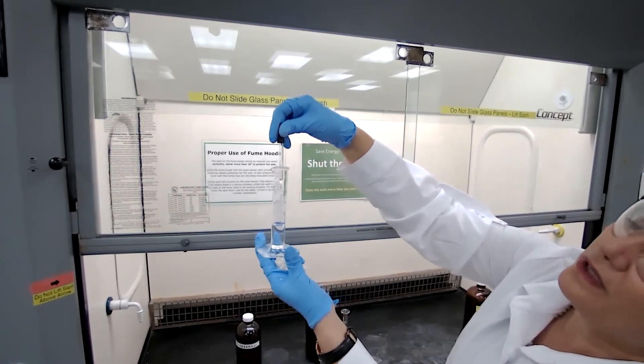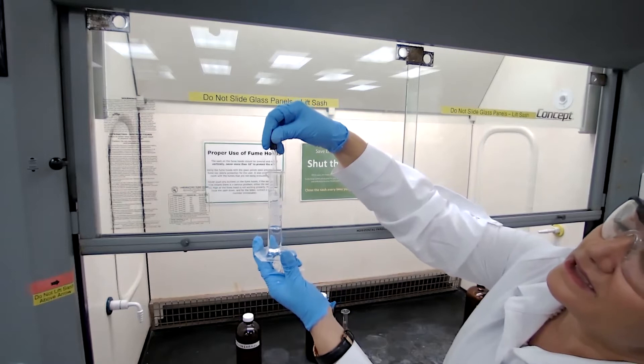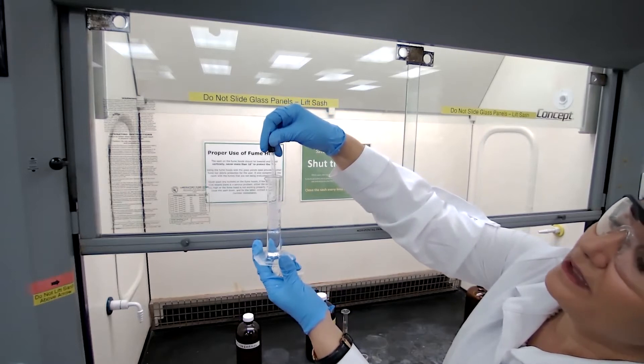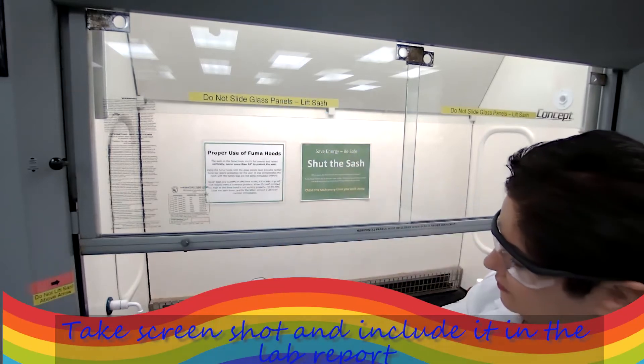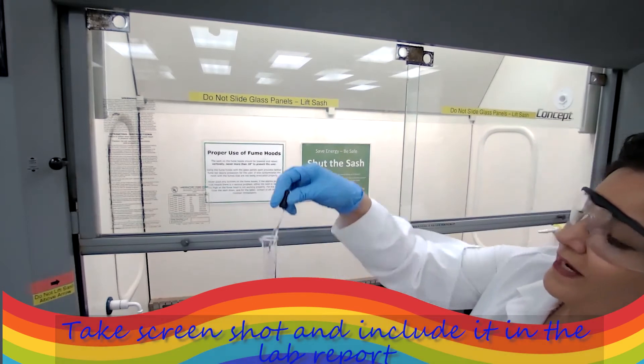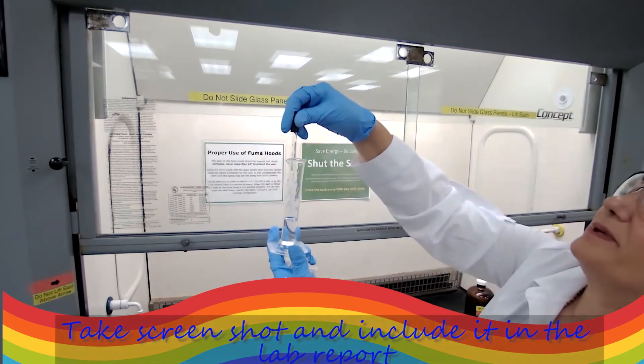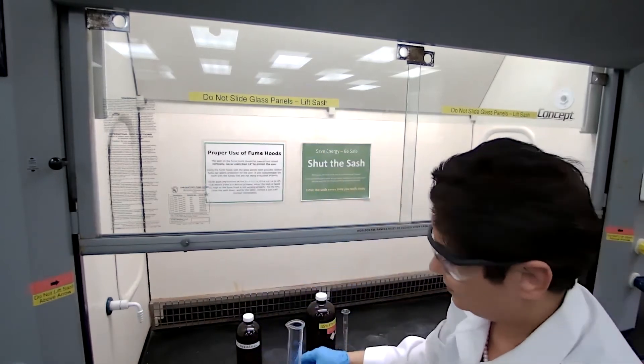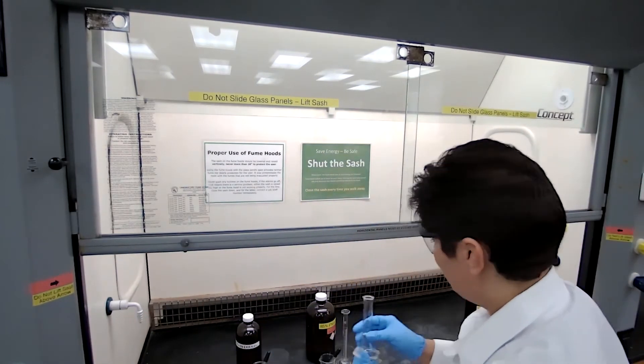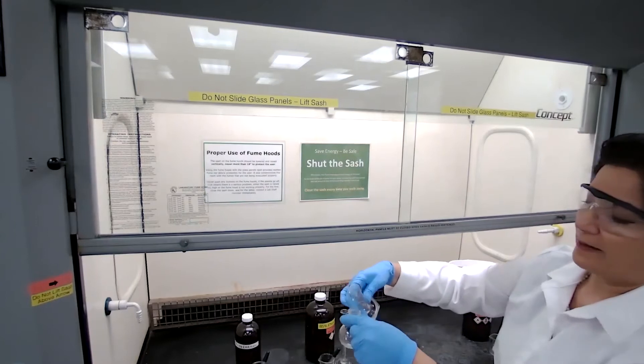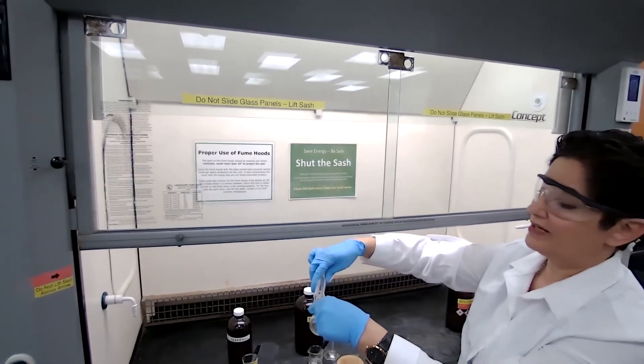We are looking for the meniscus to reach the 10.6 milliliters. I don't want to add drop by drop from the beginning because that would take a long time. Pour that into our boiling flask.